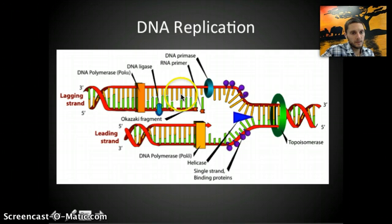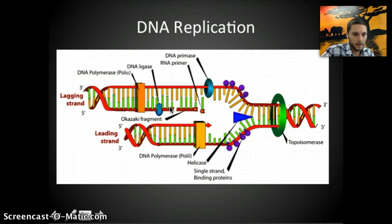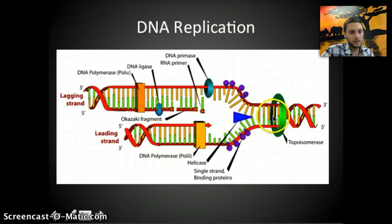It gets more difficult when we look at the lagging strand — the opposite strand. Because DNA has to be added in a 5' to 3' direction, and because this original template strand runs in the opposite direction of the leading strand, the process is reversed. DNA polymerase has to add a section of nucleotides and then almost double back to add more, moving in the opposite direction of helicase.